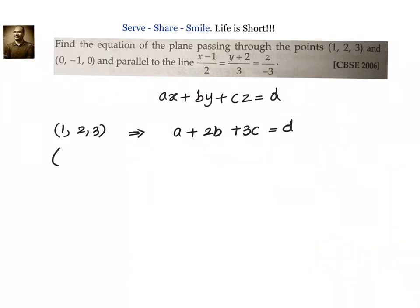What we will have? a + 2b + 3c = d. Similarly, let us substitute the other point (0, -1, 0). That will give us 0 - b + 0 = d. Now, that is our second equation.